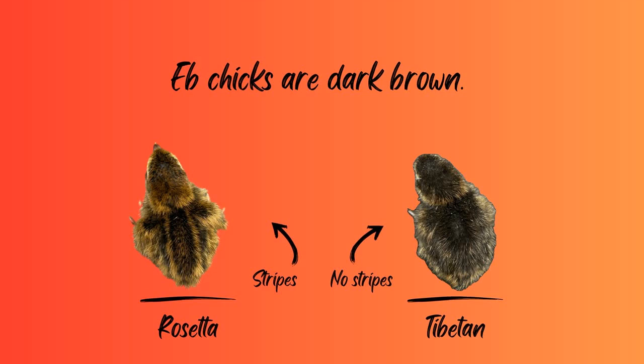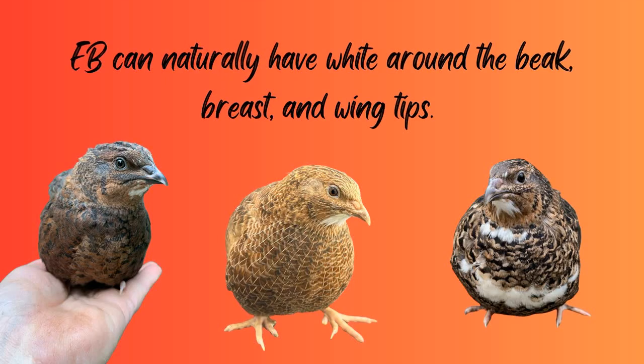EB chicks tend to be brown. Rosetta will have stripes where Tibetan won't. EB can naturally have white around the beak, breast, and wingtips — it's natural variation with the EB gene. Some people get this confused, thinking that the bird carries dotted white, when in fact it does not.